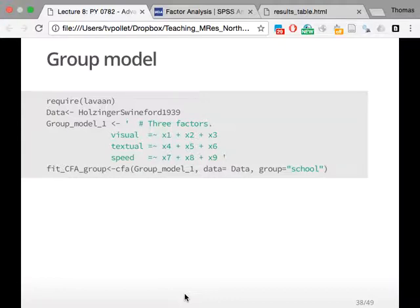This is the three-factor model which we had before, but I just renamed it to make everything cleaner. I call it group model one. Then fit CFA group, group model one, the data is the data, and I tell it what the grouping variable is. It's as simple as that.